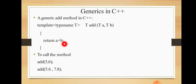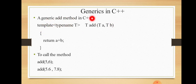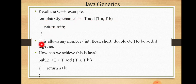In C++, we use the term 'template'. Here we have a generic add method in C++. We write: template, typename T, T add(T A, T B), return A plus B. We use the keyword 'template' to show that it is a generic subroutine. Then with typename T and the subroutine named 'add', we pass T A and T B and return A plus B.